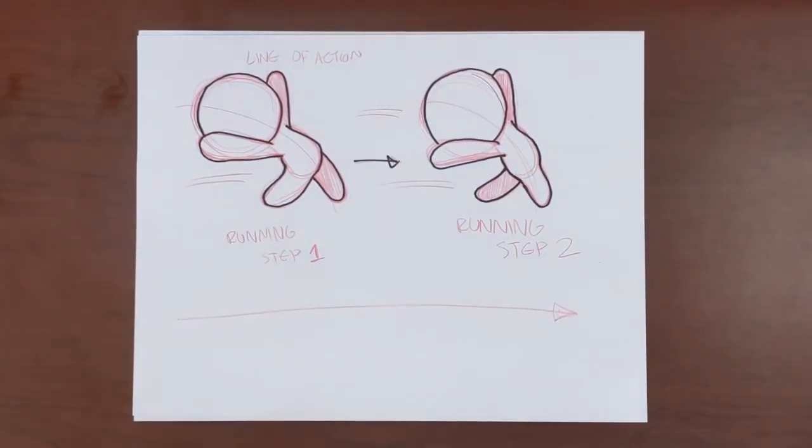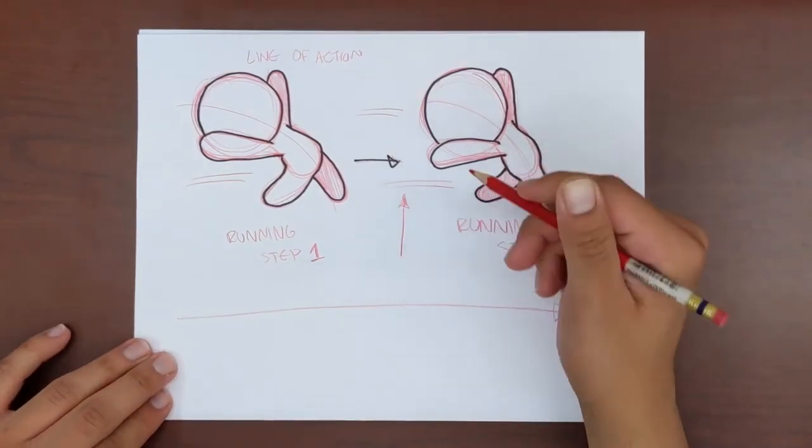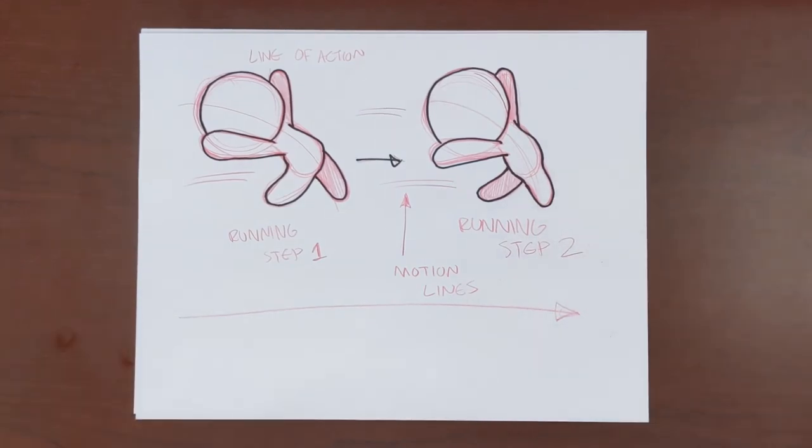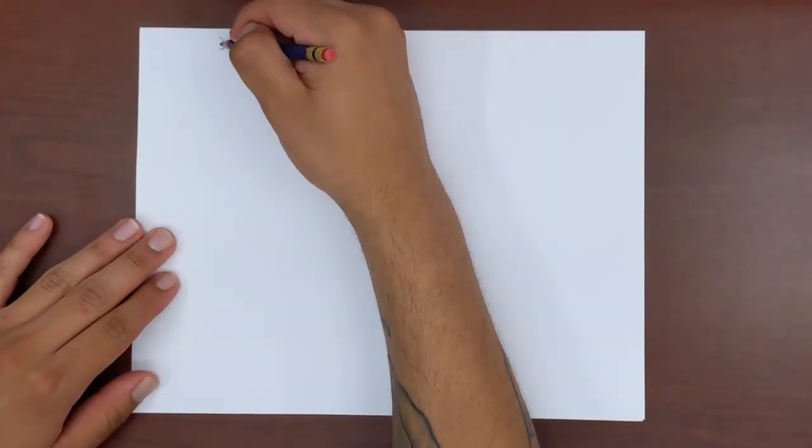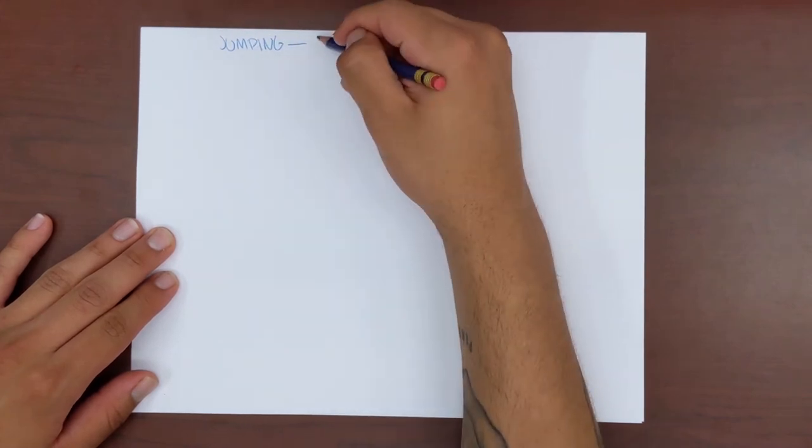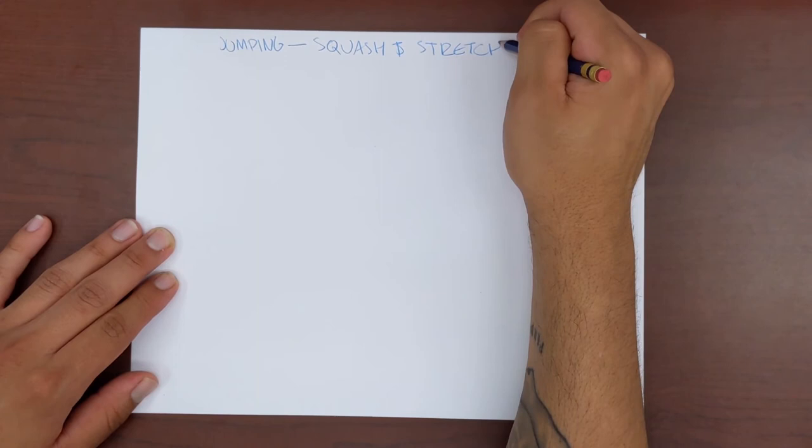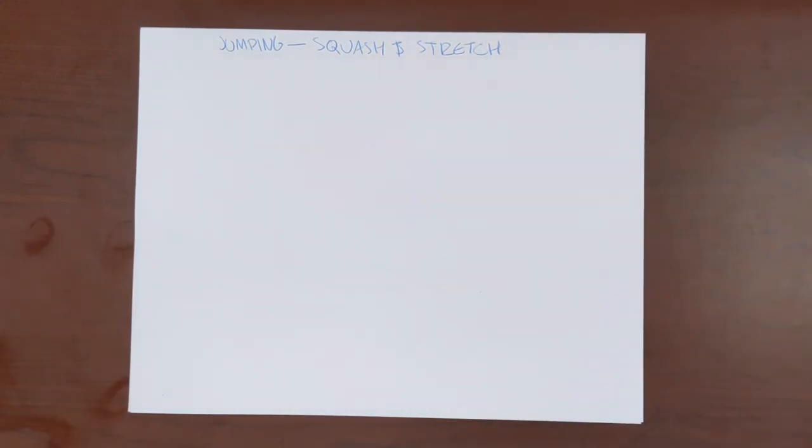To indicate that our character is running, I also added some motion lines to illustrate just how fast our character is running. Our next motion, the jumping motion, is a little trickier than the other two because it requires a couple new animation terms: anticipation and squash and stretch.